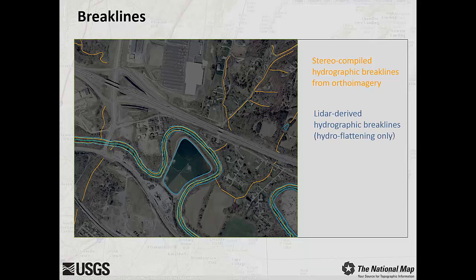Brake lines are used to create hydro-flattened DEMs by defining the edges of water bodies so that the water can then be flattened — that is, the entire water surface is constrained. Smaller closed lakes and ponds will be uniformly flat and level. Wide rivers and reservoirs will exhibit a downhill gradient, also referred to as a monotonic flow, as they do in nature, while remaining level from bank to bank. For the purposes of hydro-flattening, most brake lines will be polygonal, though single-line centerlines are needed in gradient water bodies to expedite production.